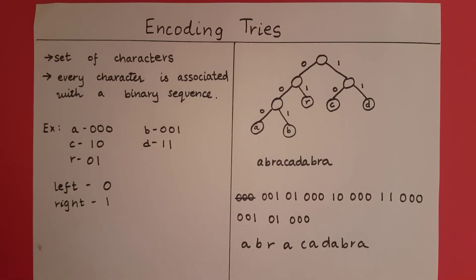So with that, we have learned how to construct an encoding trie, encode a particular string using an encoding trie, and decode that string using the encoding trie.